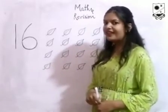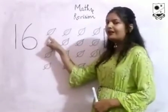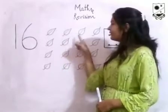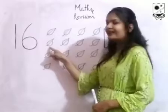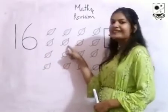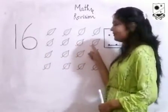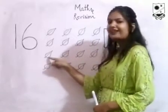How many leaves are there? 1, 2, 3, 4, 5, 6, 7, 8,